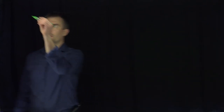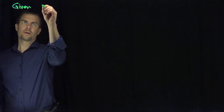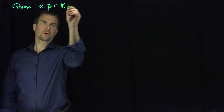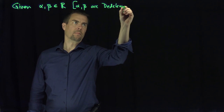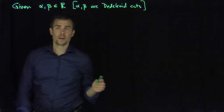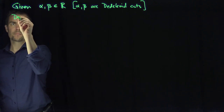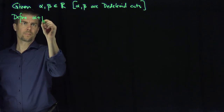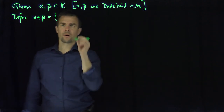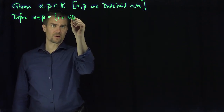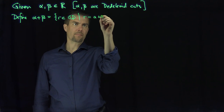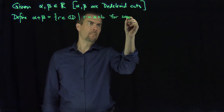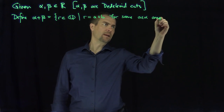Hello students. In this video we'll define addition of real numbers. Let's be given alpha and beta real numbers. Of course this means that alpha and beta are Dedekind cuts, and what I'm going to do is define alpha plus beta to be the set of all rational numbers q such that r equals a plus b for some a in alpha and b in beta.